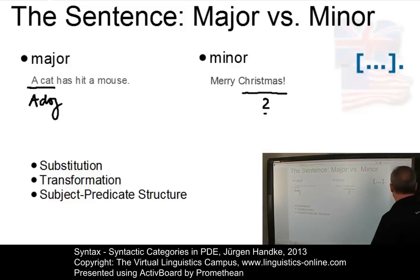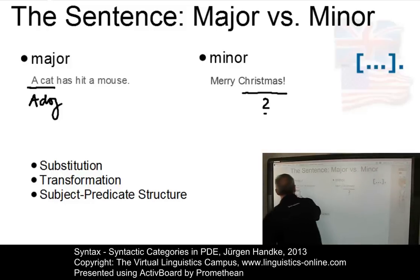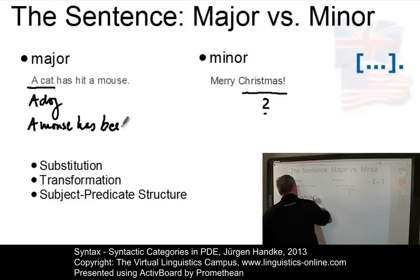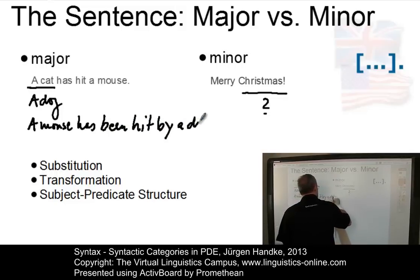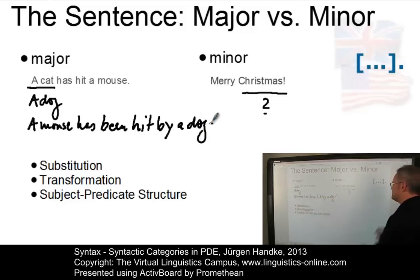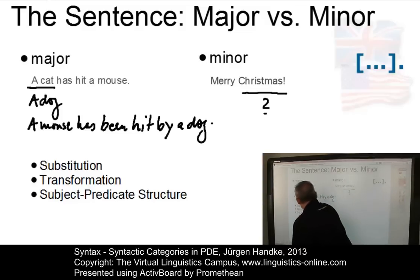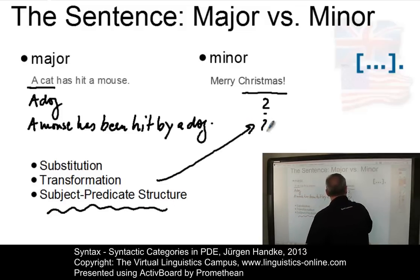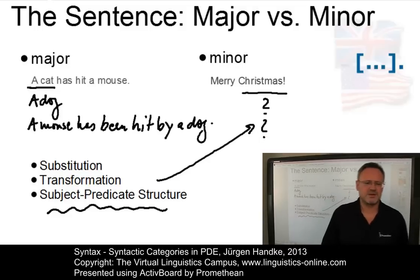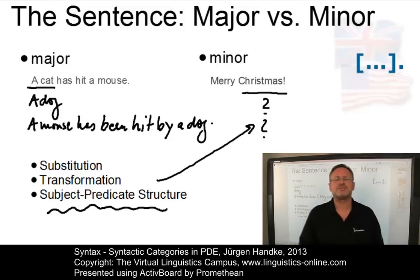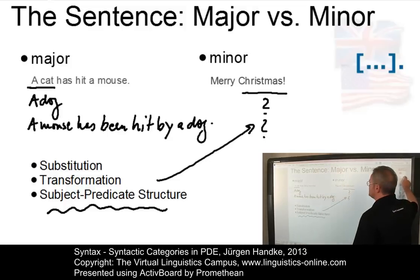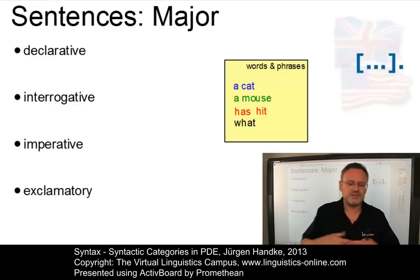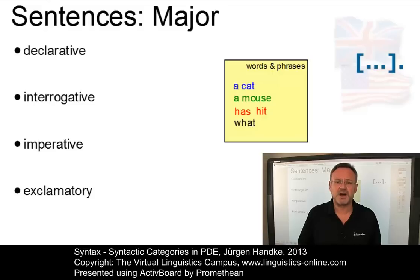Or we can transform a major sentence into a passive sentence, such as a mouse has been hit by a dog. But Merry Christmas cannot be transformed. And clearly, there is no subject-predicate structure in a minor sentence, so this third criterion doesn't apply. Minor sentences are restricted in many ways. Major sentences, by contrast, have a fully developed structure. Major sentences constitute the focus of any syntactic analysis. Minor sentences only play a marginal role.